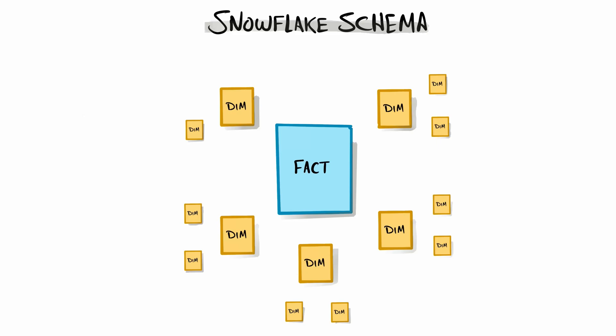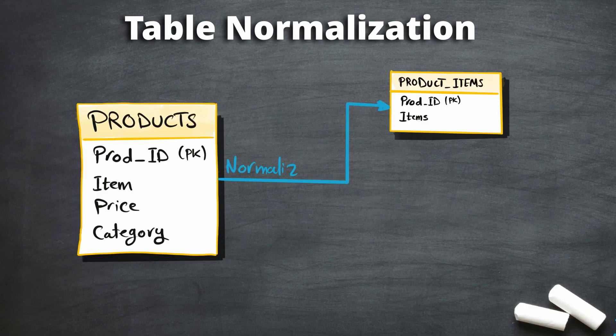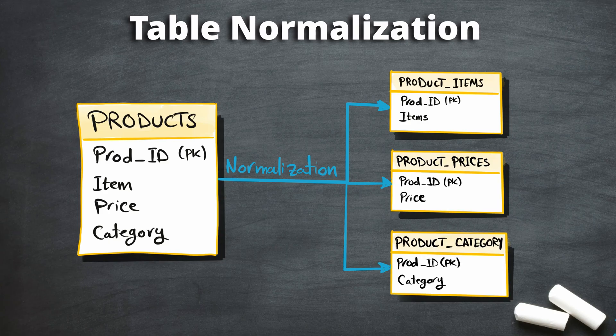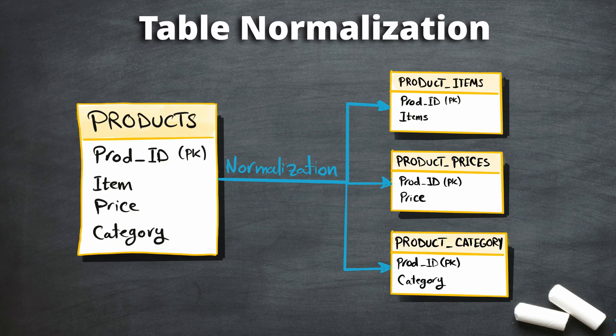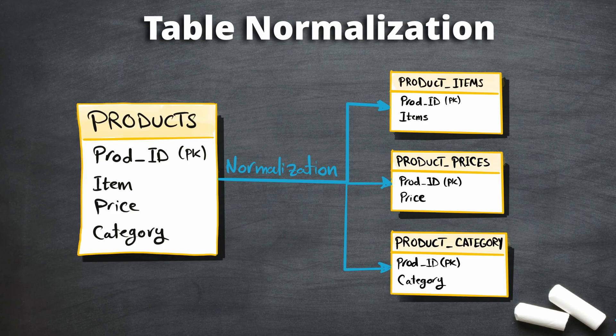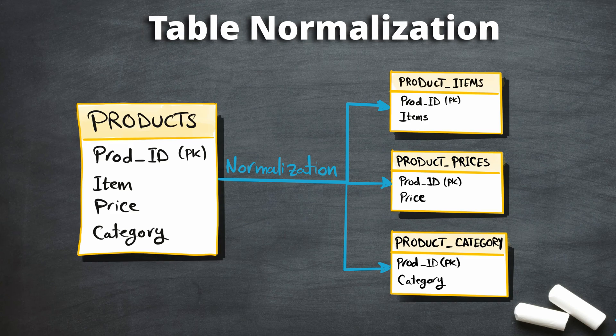The other data model we call snowflake schema. It is very similar to star schema, but the dimensions here are breaking down into sub-dimensions. Normalized tables or dimensions means that those tables are broken down into small pieces to avoid having big tables or big dimensions, which leads to many data duplications and slow performance.